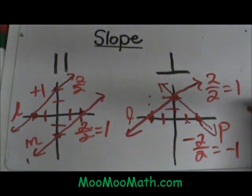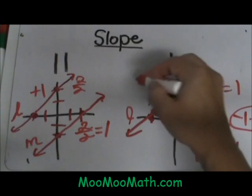When you multiply these together, negative 1 times positive 1, you will get negative 1. So when you multiply two slopes together and you get negative 1 you know they are perpendicular. And also you can find the negative reciprocal.